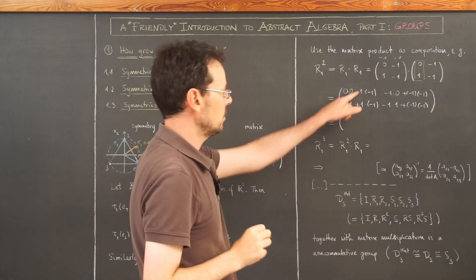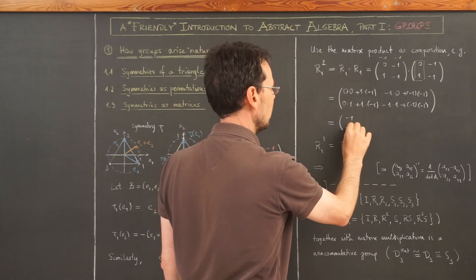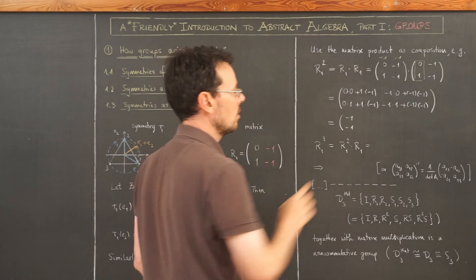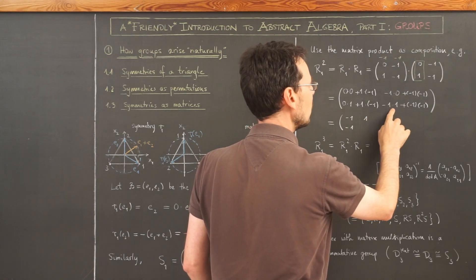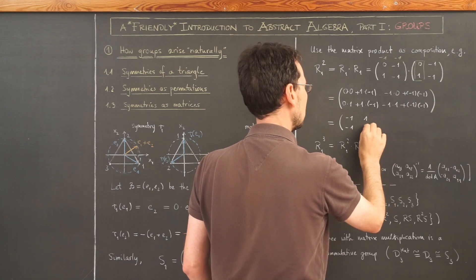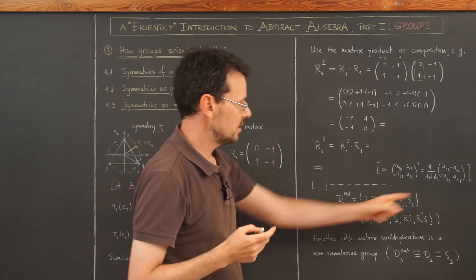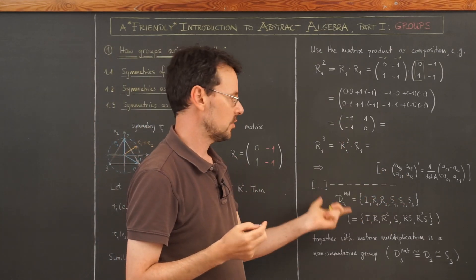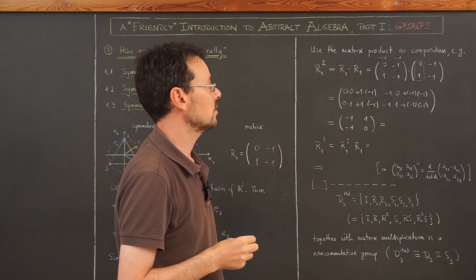And the last entry of this product matrix is minus 1 times minus 1 times minus 1. And this gives me here minus 1, here minus 1, here 1, and here minus 1 plus 1, 0. Now the big question is, is this set of matrices here actually closed under this composition, meaning matrix product?